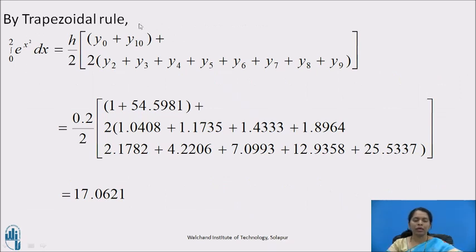By using trapezoidal rule, let me rewrite it for this example. Here we have terms from y0 to y10. Therefore, integration 0 to 2 e raised to x square dx equals h by 2 times in bracket, first term plus last term, y0 plus y10, plus 2 times all the rest terms. Here you have to write down from y2 to y9 addition of all the terms, y2 plus y3 plus y4 plus y5 plus y6 plus y7 plus y8 plus y9. Now, substitute the values from table.